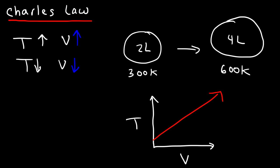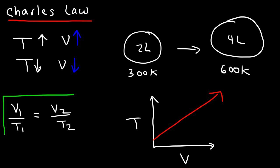The equation associated with Charles's Law is V1 divided by T1 equals V2 over T2. That's the formula you need to know when solving problems associated with Charles's Law.